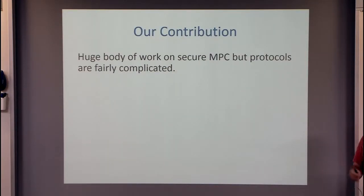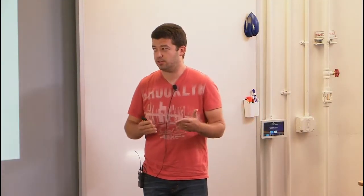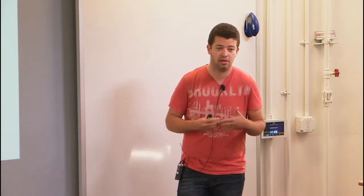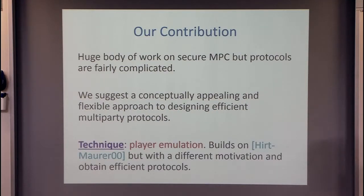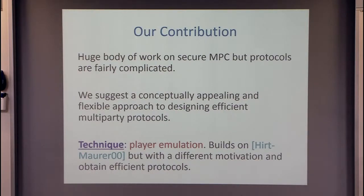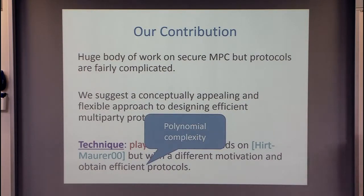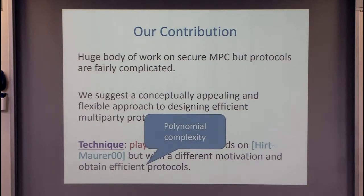Since these classical results, there has been a huge body of work on secure computation. But if you look at the protocols and want to understand or explain them, they're fairly complicated. What we try to do in this work is give a new and, I think, conceptually appealing and simple approach to designing secure protocols. The basic technique is player emulation, which builds on the work of Hirten and Maurer from 2000, but they had a very different motivation. The results we get will be efficient protocols — I just mean polynomial complexity, not claiming anything practical — in contrast to Hirten-Maurer, which has inherently higher, non-polynomial complexity in the number of players.